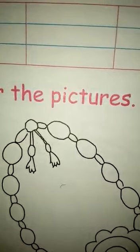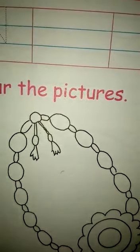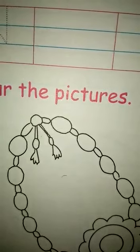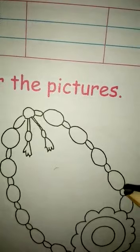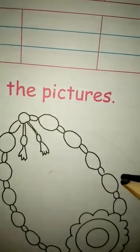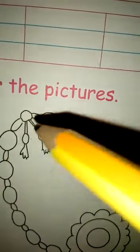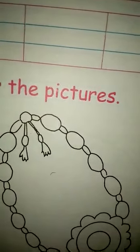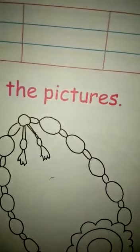N for necklace. And where do you see this necklace? Yes, your mummy or your sister wears this necklace, or your aunts also wear this necklace. This is called necklace. And where do we wear this? In the neck.